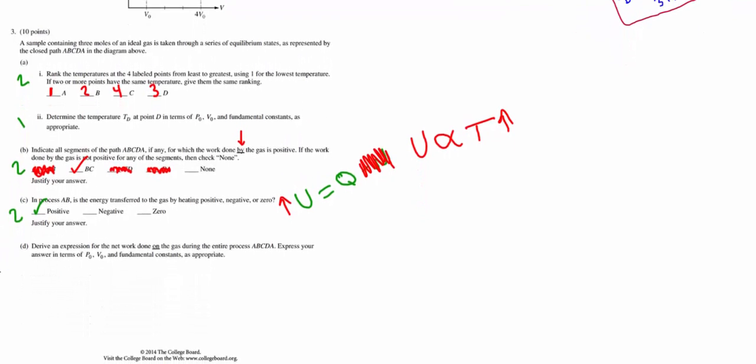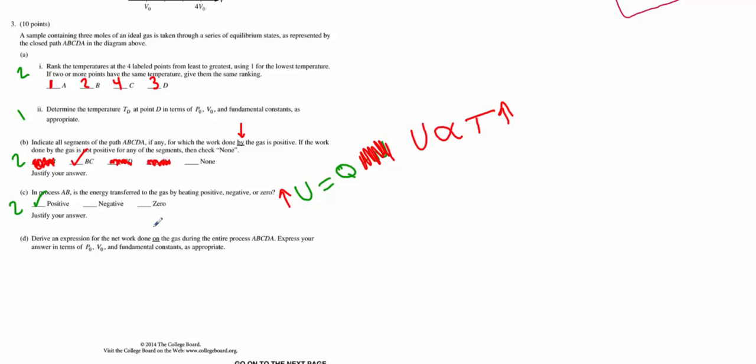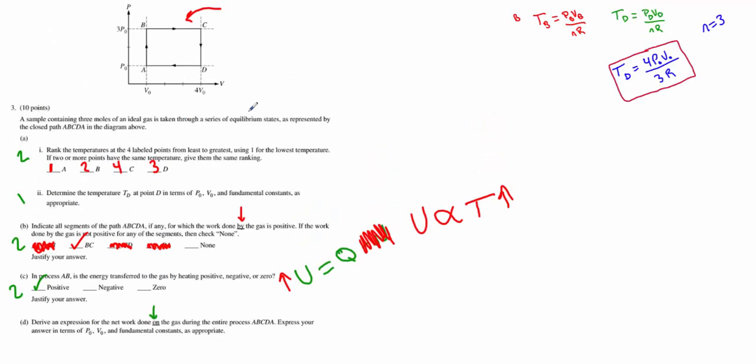And finally, D, derive an expression for the work done on the gas. This is interesting. They've been using by throughout, but at this spot now they're using the word on. Just pay attention to that. Derive an expression for the work on the gas in this entire process. Well, you may recall the work done on or by a gas is simply the area of this particular curve, that rectangle. And remember, if it's clockwise, that means positive work by the gas, which also then means negative work on the gas. So in this case, our expression on the gas is clockwise, which means our final answer does need to be negative.